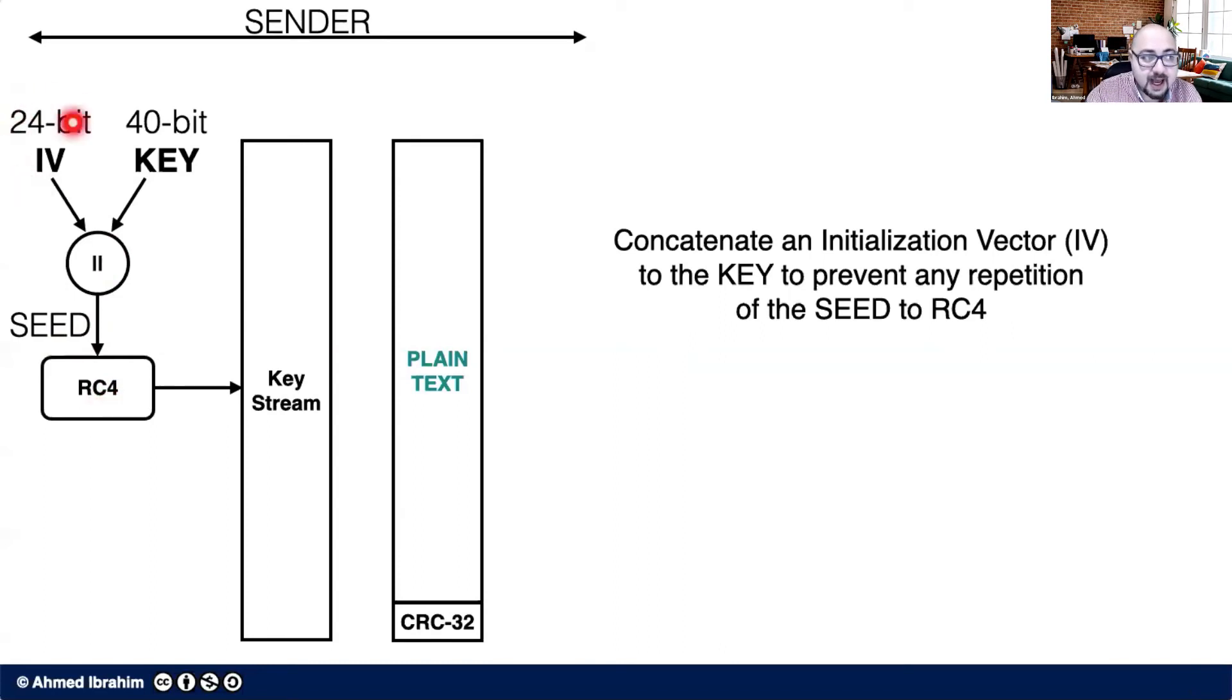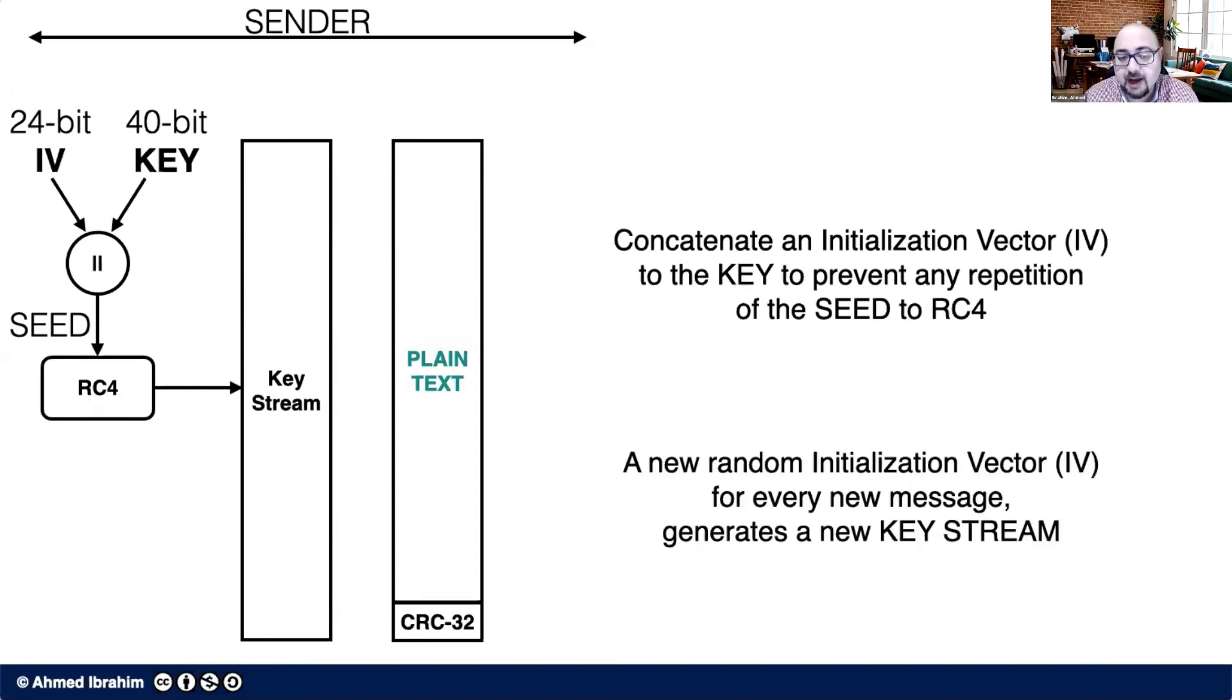And since the IV changes every time, then the seed will be changing every time, then the key stream will be changing for every plain text. So a new random IV for every new message generates a new key stream for that new message.